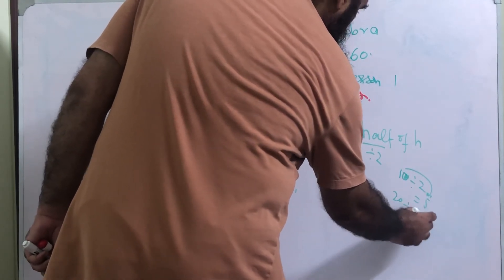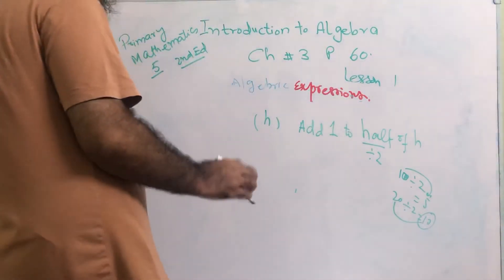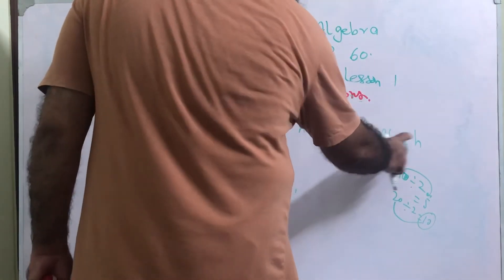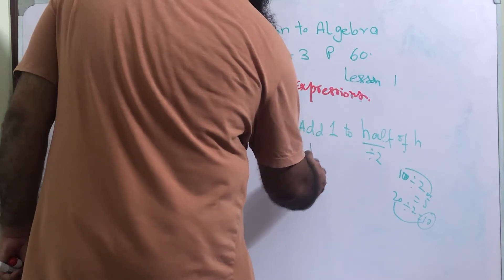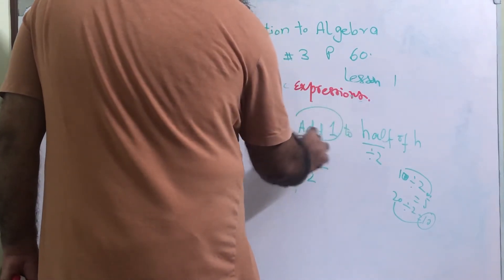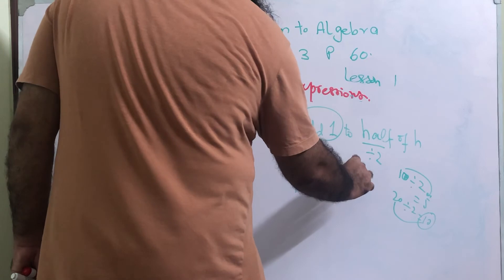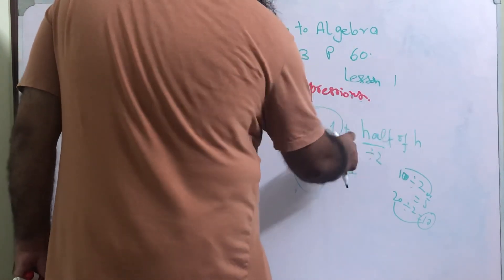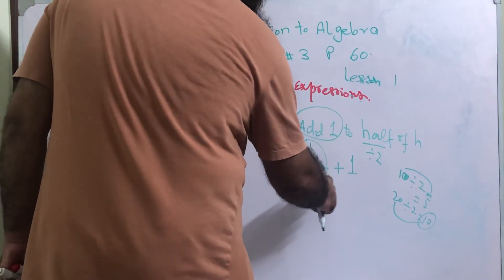Similarly, 20 divided by 2 is 10 — half of 20 is 10. So when you divide anything by 2, it becomes half of that thing. So half of h means we need to divide h by 2. In algebraic expression we write it as h over 2. We need to add 1, so the answer is h over 2 plus 1. This is the answer of part h.